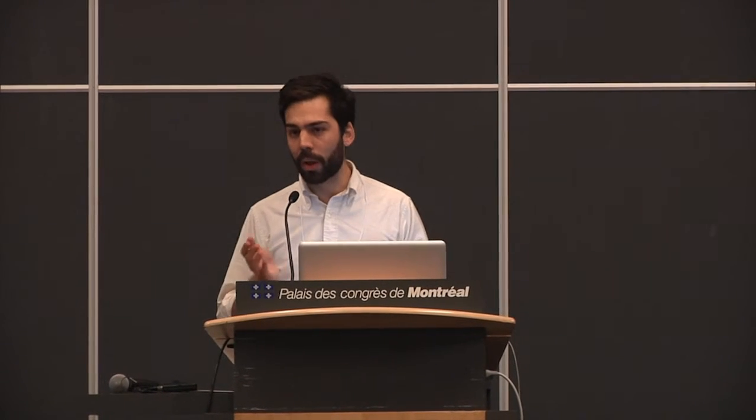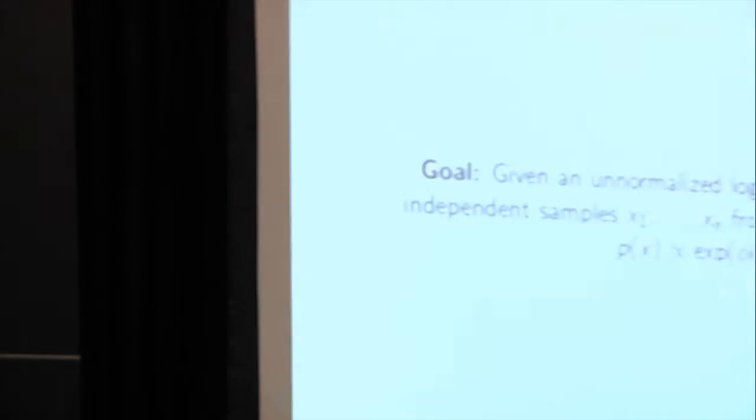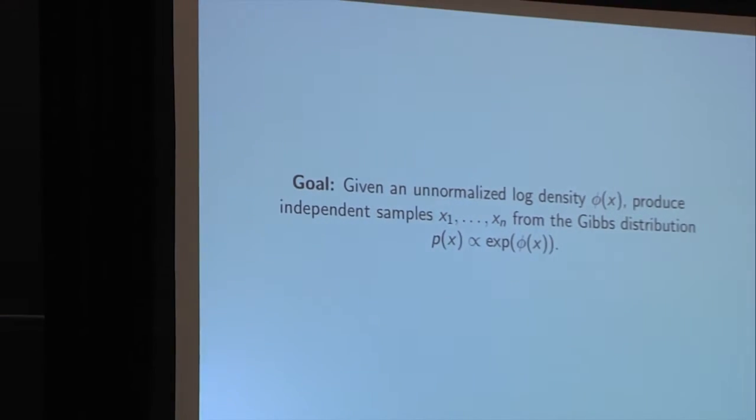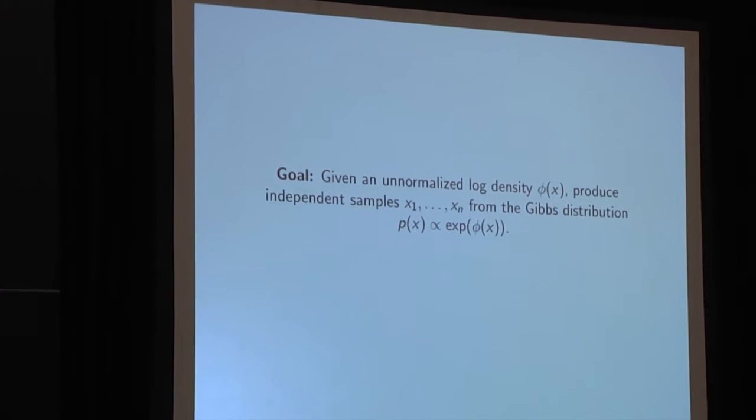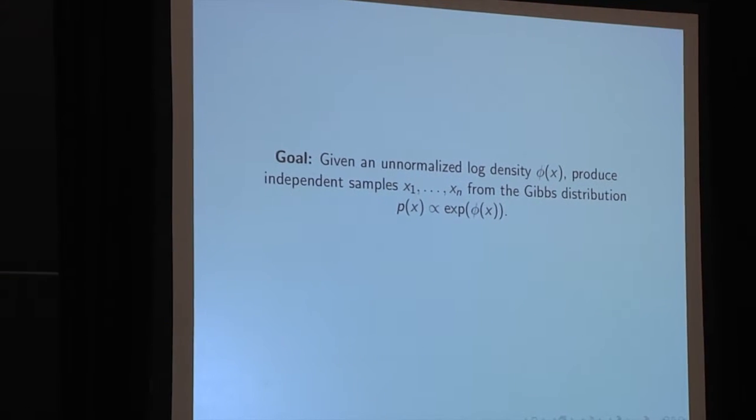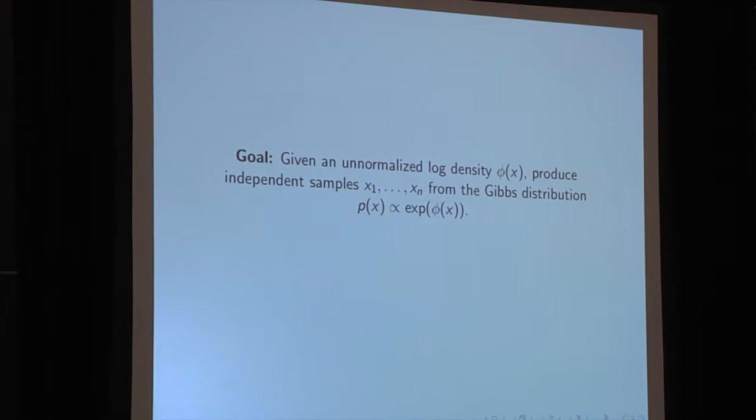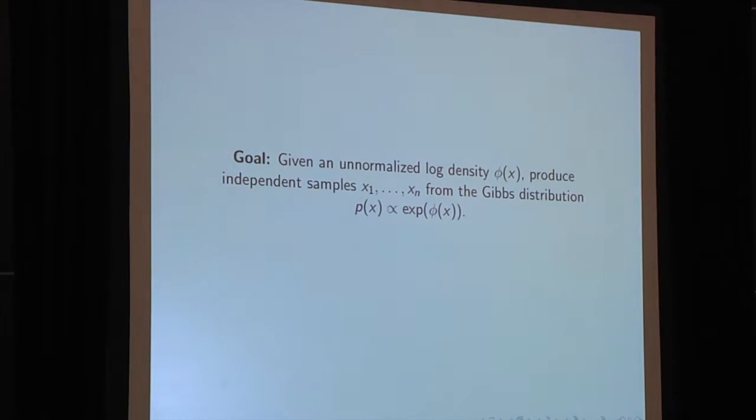A little more specifically, the goal is: given an unnormalized log density phi of X, produce independent samples from the Gibbs distribution P of X, which is proportional to exp of phi of X.